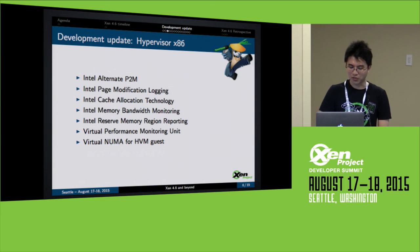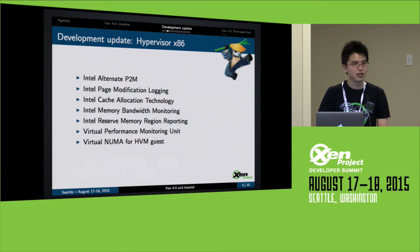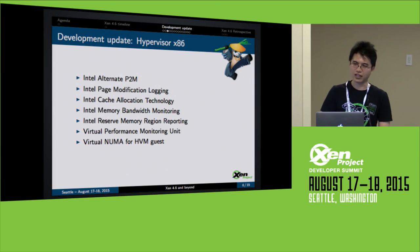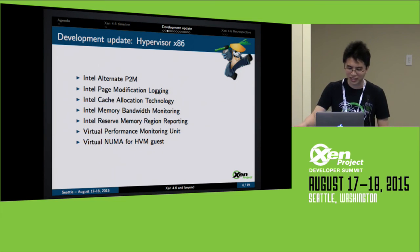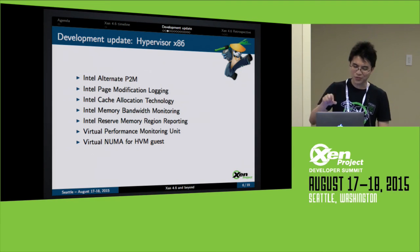Next is virtual performance monitoring units, contributed by Oracle. That allows you to profile the hypervisor and the guest with the perf tool included in the Linux kernel, though the perf tool part is not yet there and is still under development. The final thing is virtual NUMA for HVM guests, which allows you to conjure up a virtual NUMA topology for HVM guests.